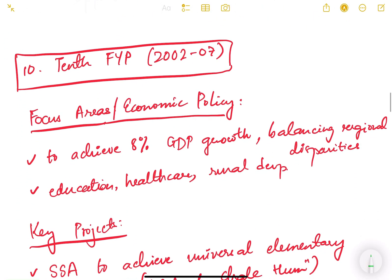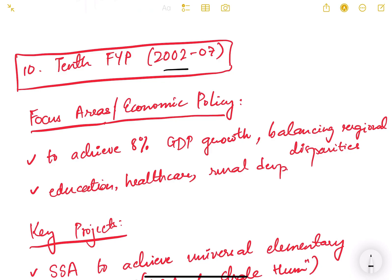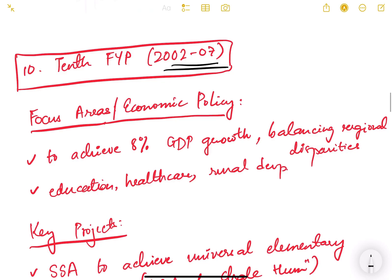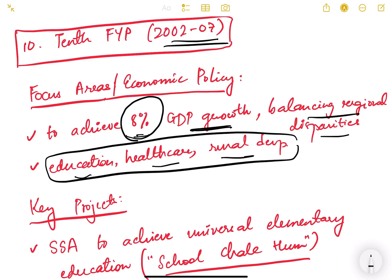The 10th five year plan was from 2002 to 2007. For the first time, the focus area was to achieve 8% GDP growth — a notably high target. Balancing regional disparities, education, healthcare, and rural development remained important focus areas as well, being social sectors from which people benefit directly.